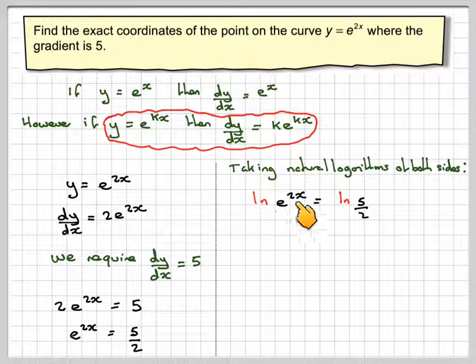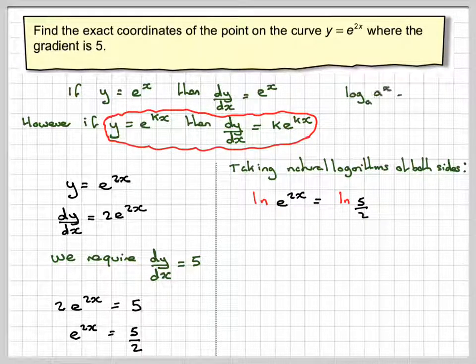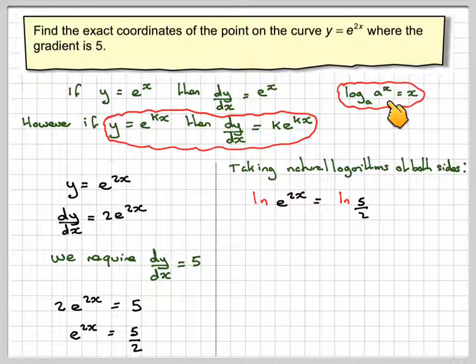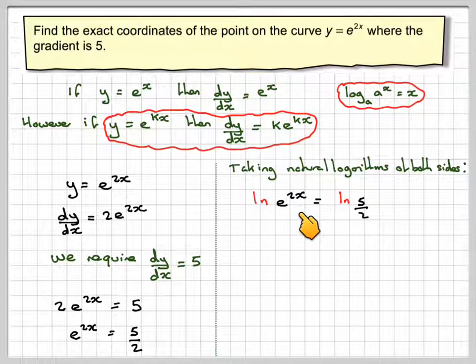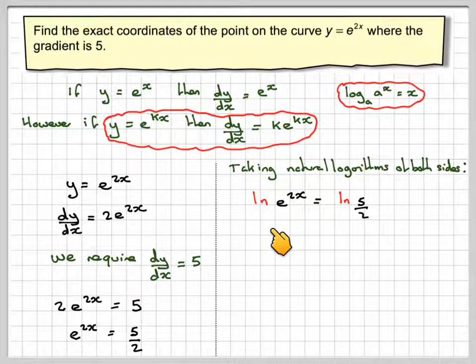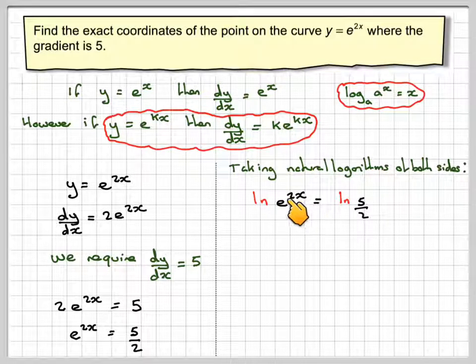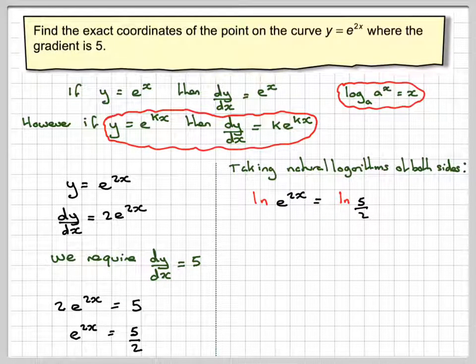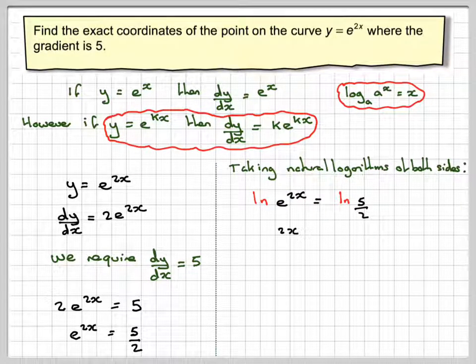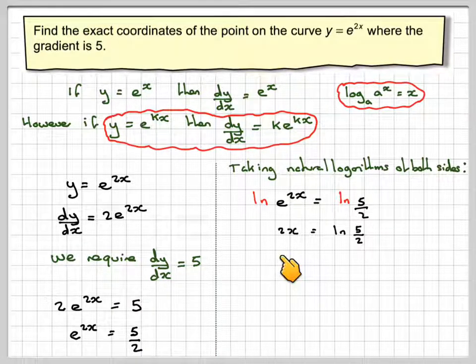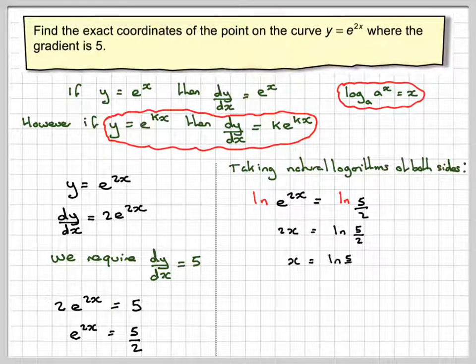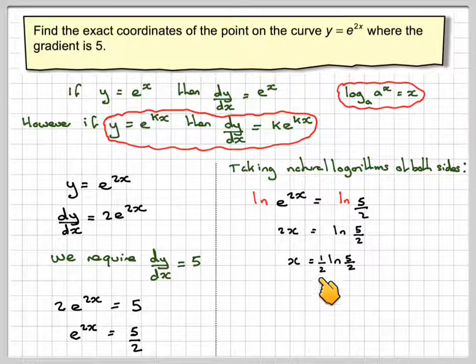Then here we can apply a rule that we've already learnt. Log to the base a of a to the x is equal to x. So we've got log to the base e of e to the 2x. So this just becomes 2x, and this side will stay the same. And then we'll divide by 2, or multiply by a half, and we get that x is a half ln of 5 over 2.